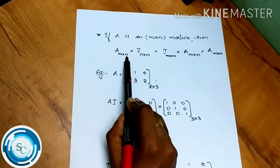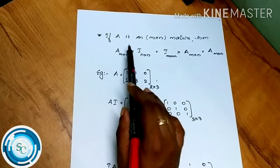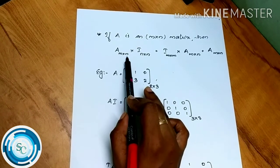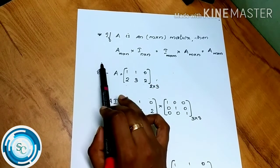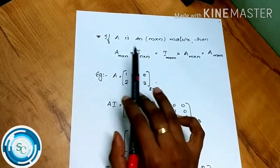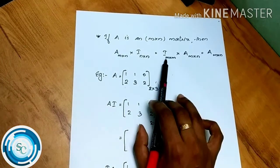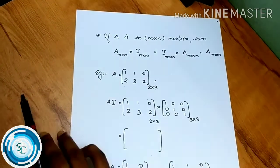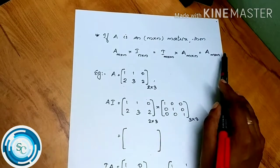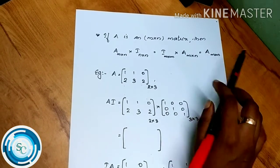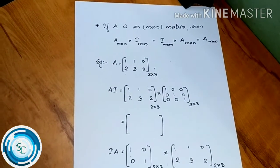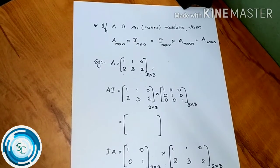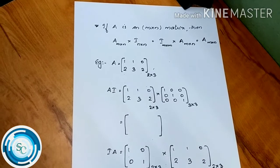The dimension of the identity matrix used depends on which side it is multiplied. The number of columns of A must equal the size of the right-side identity matrix. This is what determines the identity matrix dimension for non-square matrices.